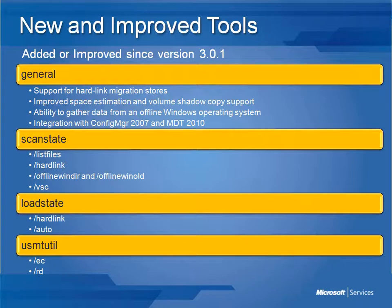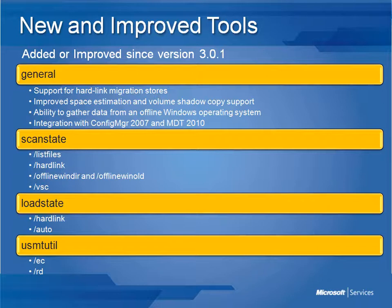Version 4 also includes improved space estimation, where the ScanState command will now accurately estimate the size of the migration store as well as any additional temporary space required during its creation. This results in a massive reduction in failures due to low disk space. Additionally, in version 4, Volume Shadow Copy is supported, meaning ScanState commands can now make use of the Volume Shadow Copy service to capture files that are locked for editing by other applications.